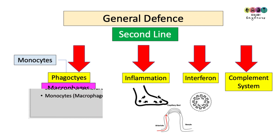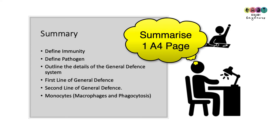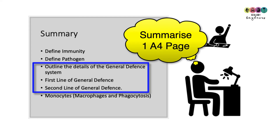And the complement system — that system of proteins that destroys bacteria and marks other pathogens for destruction by macrophages. Make sure you can define immunity and pathogen, and give an outline of the general defense system. Summarize the first and second lines of defense, and know all about monocytes and phagocytosis.